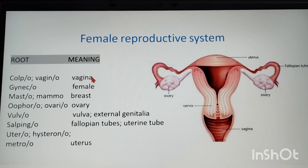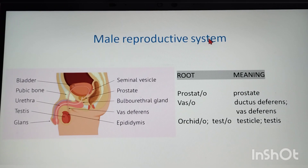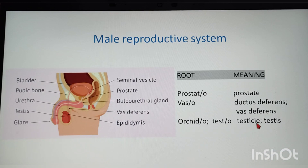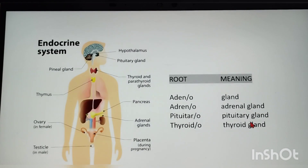Next is the male reproductive system: prostato — prostate; vaso/ductus deferens — vas deferens; orchido/testo — testicle/testis. The different term to note is orchido for testicle/testis.